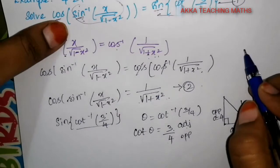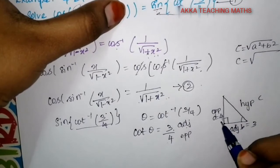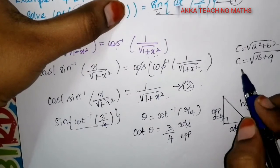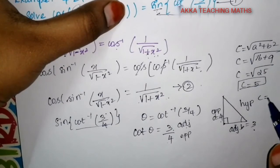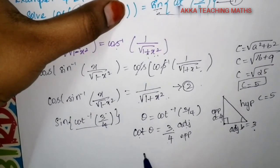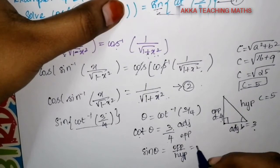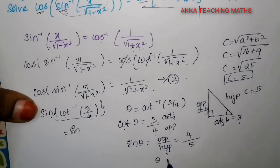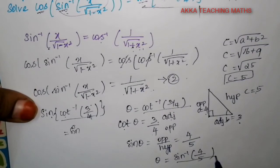Using the Pythagoras theorem formula, c is equal to root of a square plus b square. Here, with values 3, 4, and 5: the hypotenuse c equals 5. So sin theta equals opposite side by hypotenuse, which is 4 divided by 5. Therefore theta is equal to sin inverse of 4 by 5.